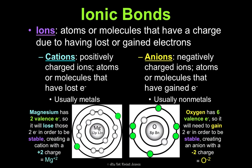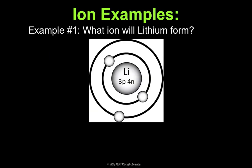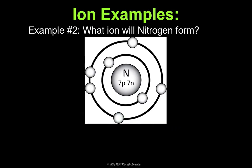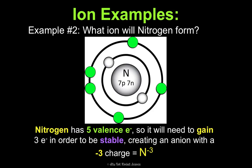Think about lithium. It has one valence electron, so it's going to lose that one to be stable. When it loses one, it becomes less negative — meaning more positive. Since it has one valence electron, it will lose it and form a cation with a +1 charge, written as Li⁺¹. What about nitrogen? It has five valence electrons, so it's easier to gain three electrons than lose five. It gains three to get its full outer energy level, making an anion with a −3 charge — written as N³⁻.